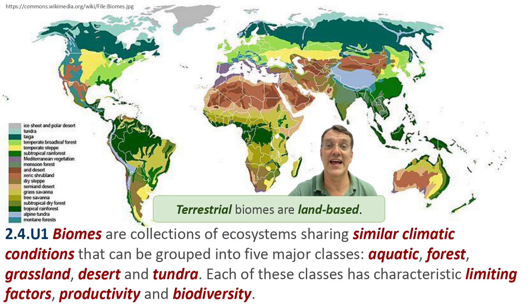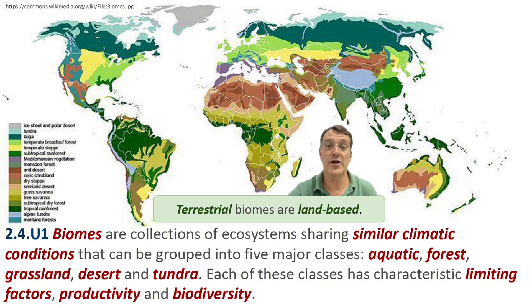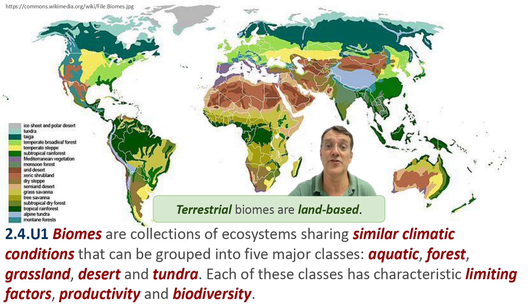Terrestrial biomes are land-based. If you look at the world map, you can see how these biomes are distributed globally. Notice the patterns — similar biomes often occur at similar latitudes around the world, that's their distance from the equator. This is because climate follows predictable patterns based on latitude, which is what we're going to explore in just a few moments.